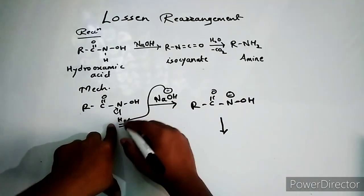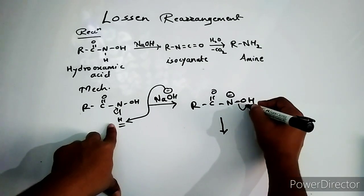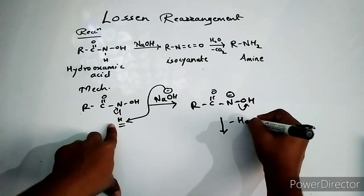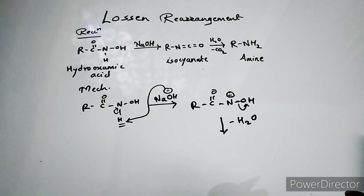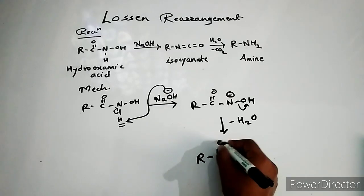With this proton, oxygen gets protonated and it leaves out as minus OH2. We know OH is not a good leaving group but H2O is a good leaving group and it leaves out, and now we are getting...